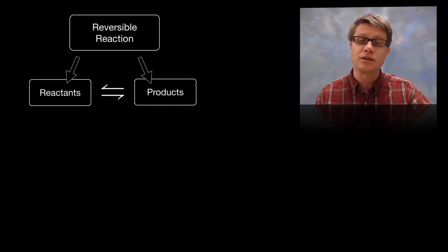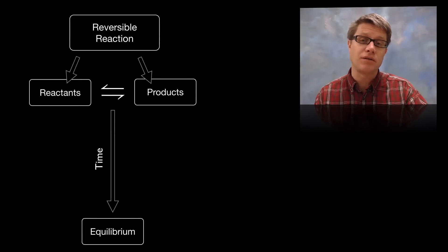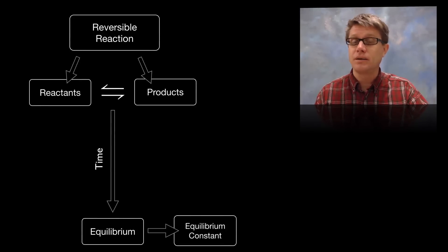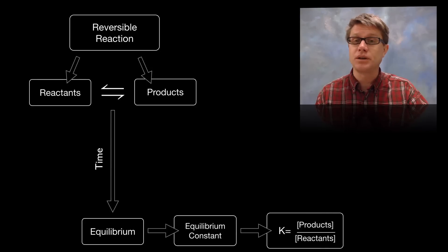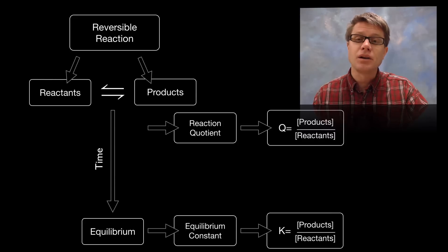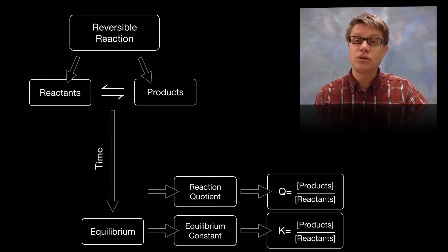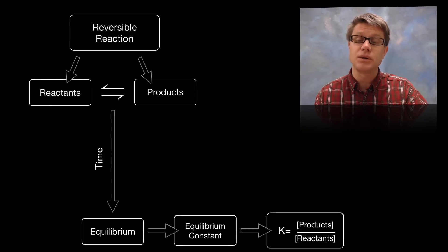In a reversible reaction the reactants become products, products become reactants, and over time they eventually reach equilibrium. When we reach equilibrium we can calculate the equilibrium constant K, which is simply the concentration of products divided by the concentration of reactants. But along that pathway we could also calculate Q, which is the concentration of products to reactants at any given time. Over time Q is going to approach and eventually become K once we reach equilibrium.